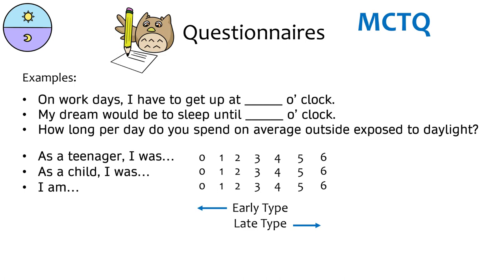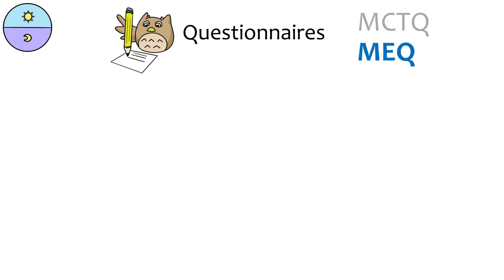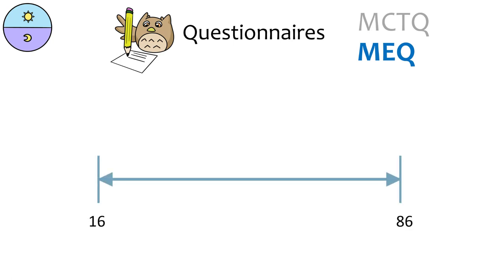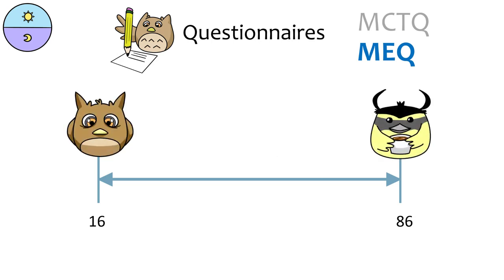The Horne-Ostberg Morningness-Eveningness Questionnaire, or MEQ, is composed of 19 questions regarding the individual's sleep and daily activity, including sleeping time, appetite, and how they feel throughout the day. Each answer is given a score from 1 to 4 or 1 to 5. All the scores are added up to determine a composite score that can be compared on a scale from 16 to 86, with 16 being the night owls, 86 being the morning larks, and most people falling between 40 to 60.